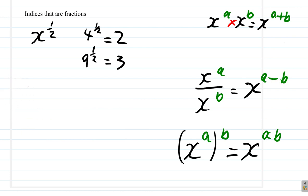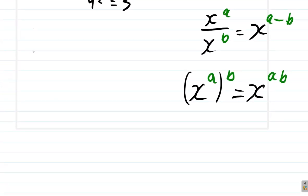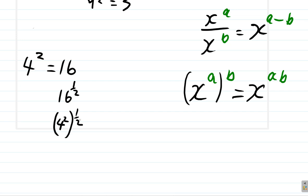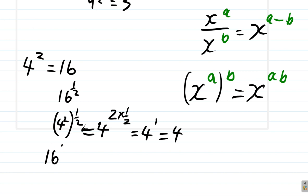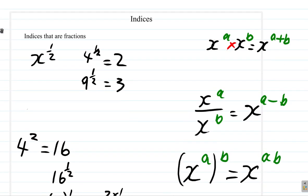Let's try another number. Suppose we find out what 4 squared is — 4 squared is 16. So we want to find out what 16 to the half is. 16 to the power of 1 half means 4 squared to the power of 1 half. According to the third law of indices, this equals 4 to the 2 times half — multiply the indices. 2 times half is 1, so it's 4 to the 1, which is 4. So 16 raised to the power of 1 half is equal to 4.